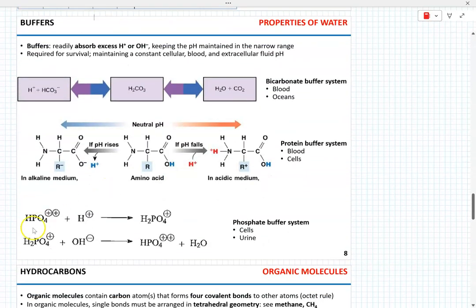In biological systems, pH should be maintained relatively stable. In order to maintain pH in biological systems, there are so-called buffers — solutions that can readily absorb excess hydrogen or hydronium cations or hydroxide anions, thereby maintaining pH in a narrow range. Buffers are essential for survival since they maintain constant pH in the cellular fluid, blood, and extracellular fluids.